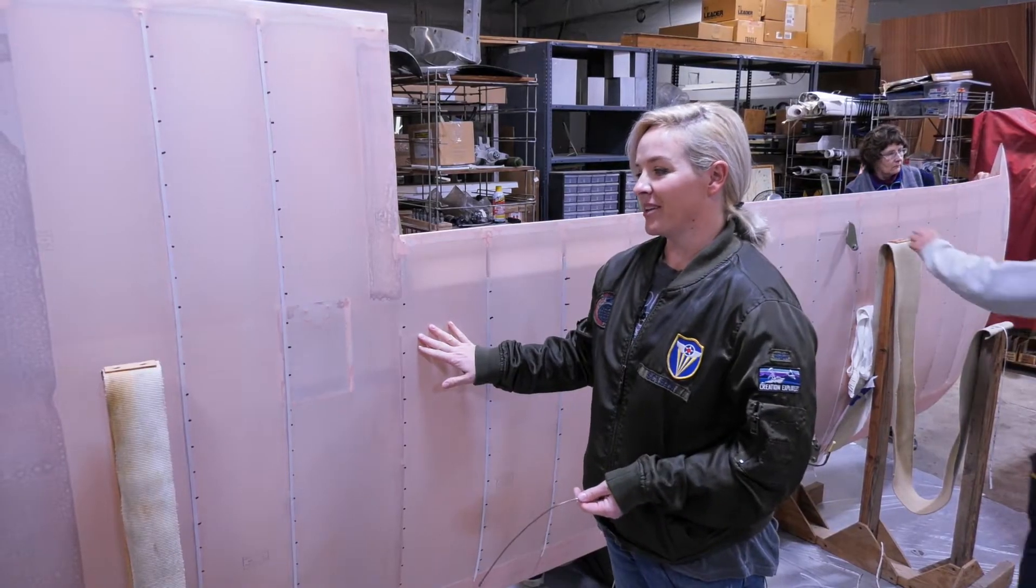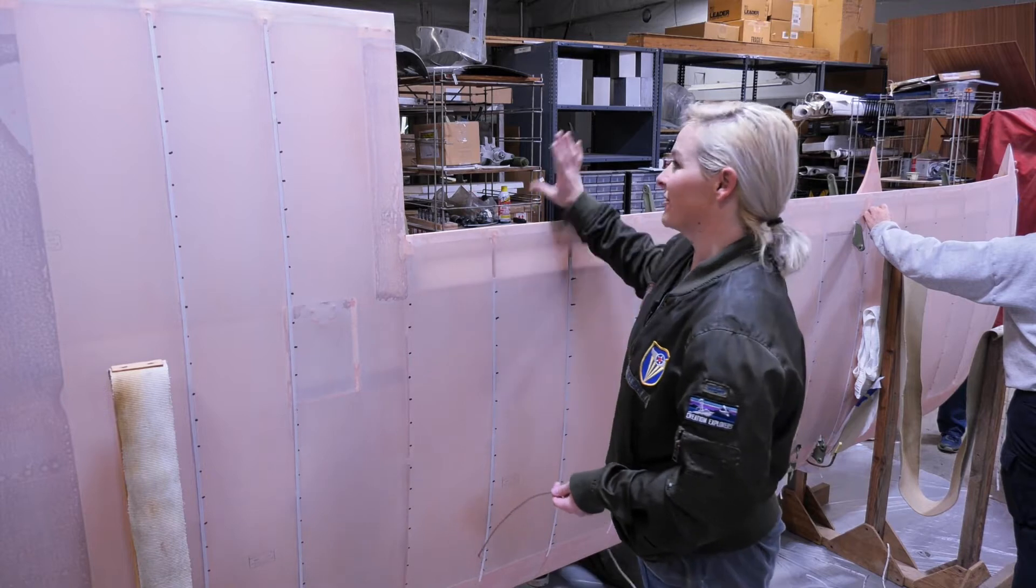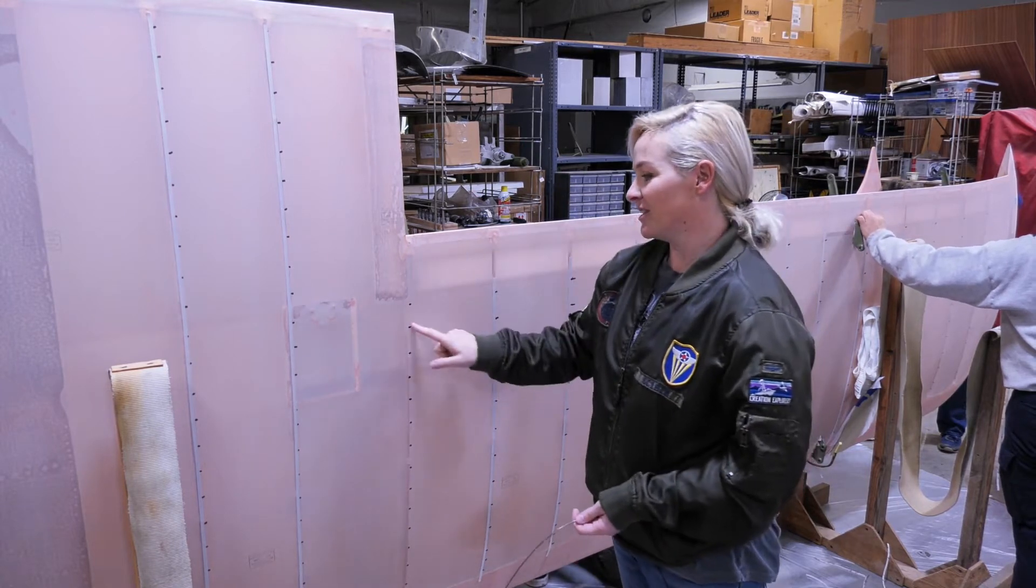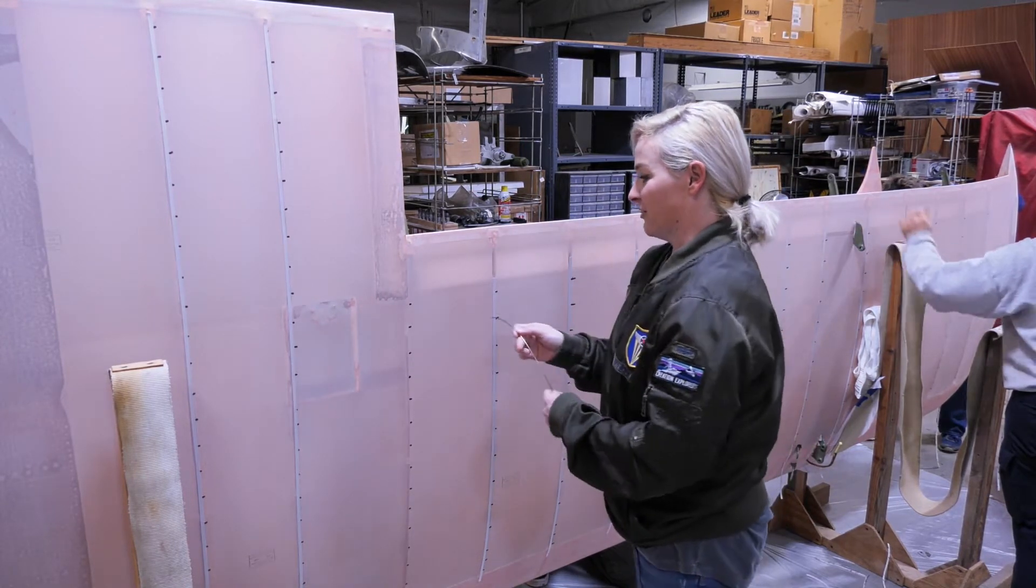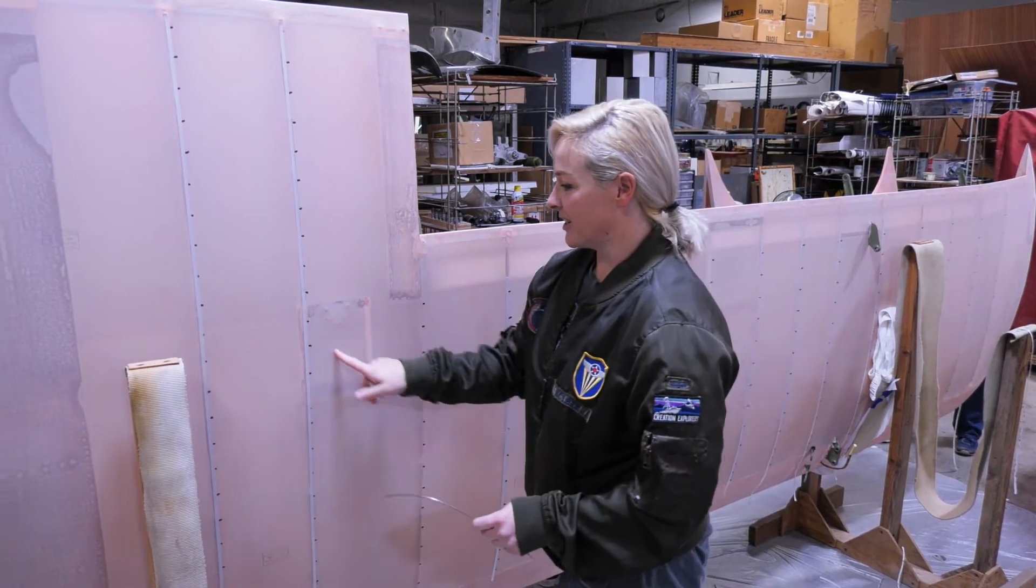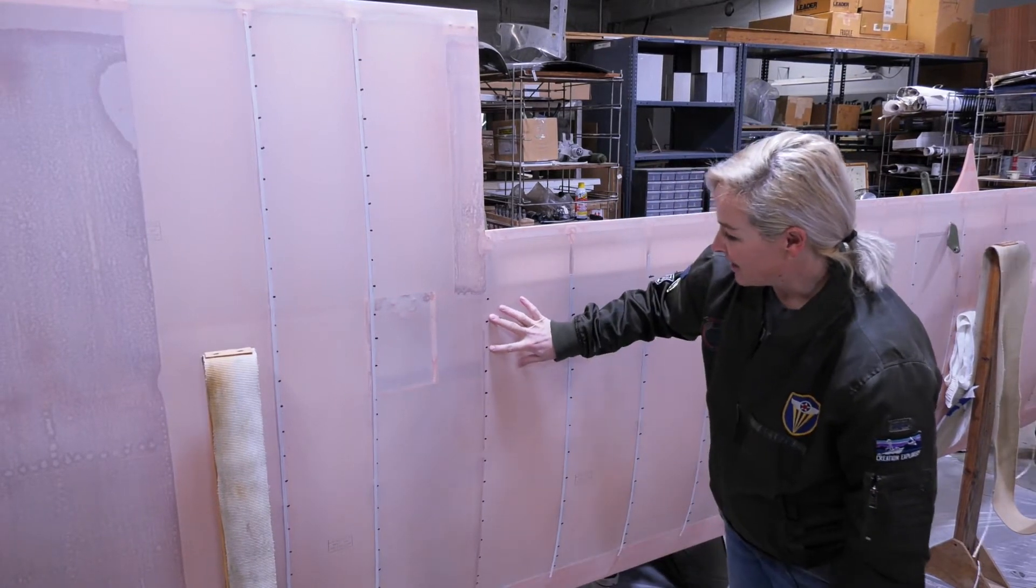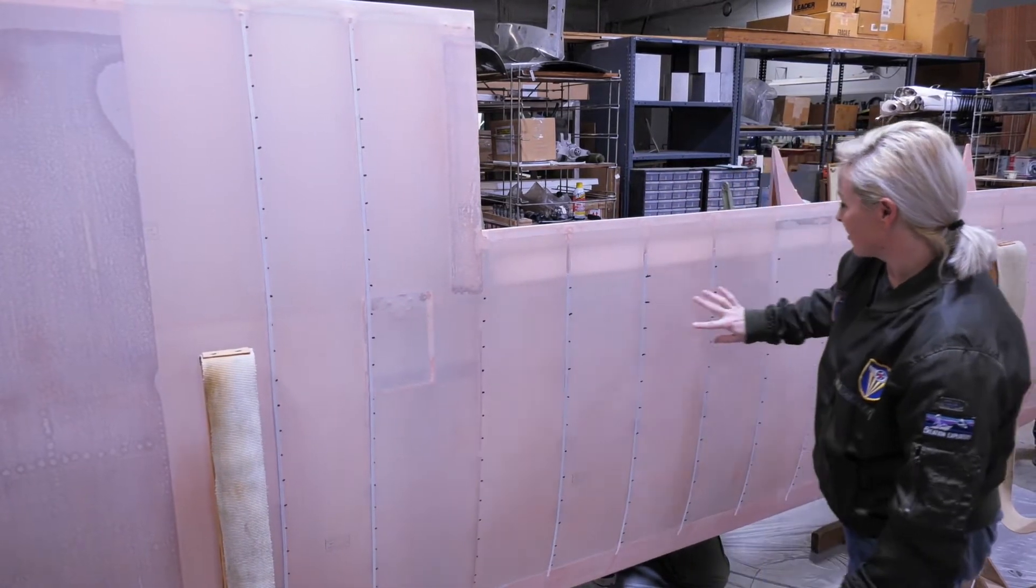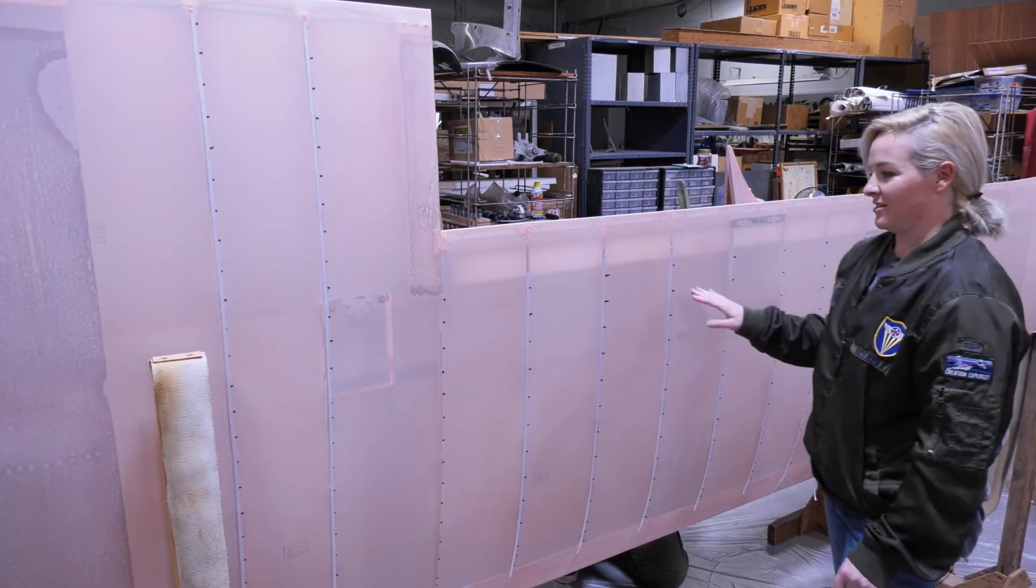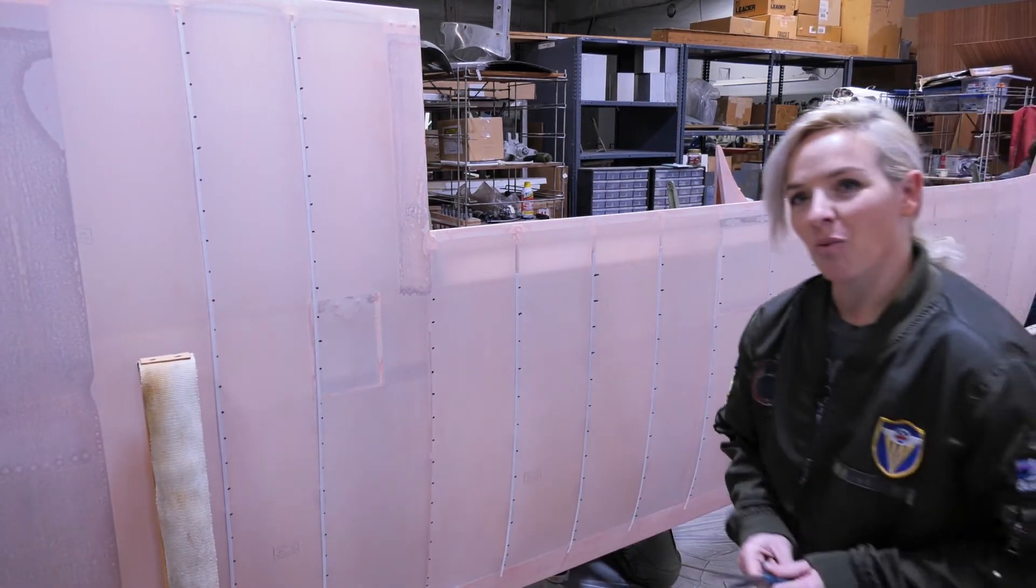This being a lower wing means it has push-pull tubes that go inside of it to control the aileron. We need to make sure that these rib stitches don't interfere with the movement of the push-pull tube. So we need to cut this open and see where the push-pull tube's at and make sure that the stitches going near the tube are in the right spot.